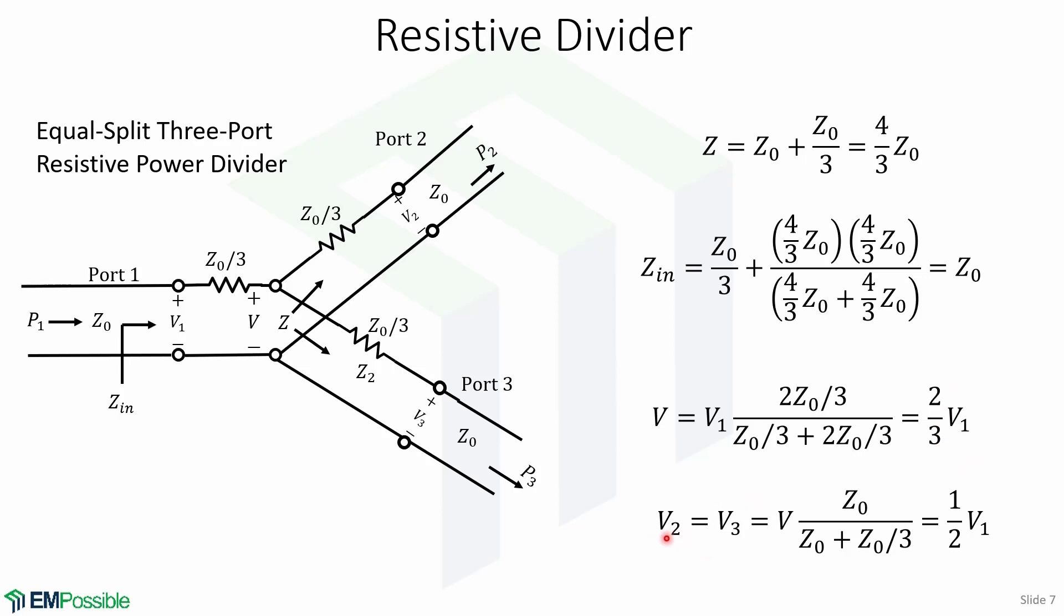The output voltages are the same, V2 equals V3, because the ports are symmetric. And also, by simple voltage division, we obtain that V2 and V3 are equal to one half of V1.